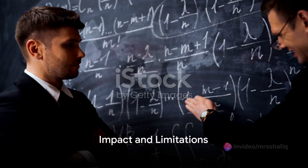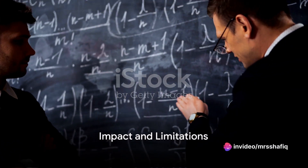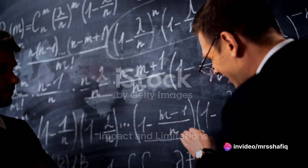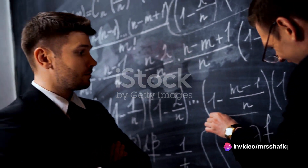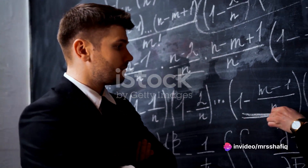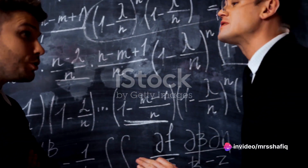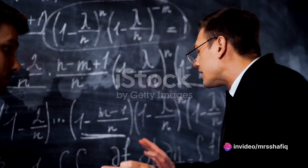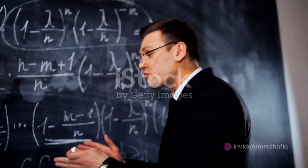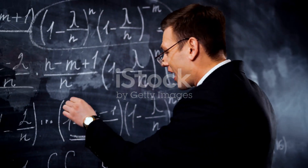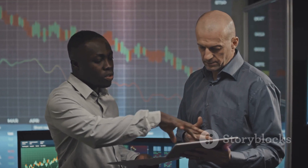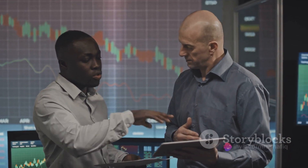Despite these flaws, the Black-Scholes-Merton model has earned its creators — economists Myron Scholes and Robert Merton — the Nobel Prize in Economic Sciences. It has also played a significant role in the growth of the financial derivatives market, estimated to be worth over a quadrillion dollars.